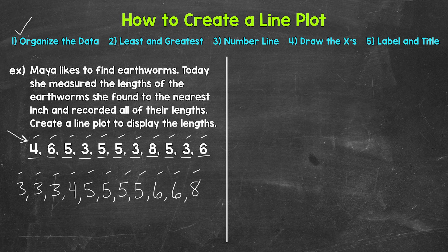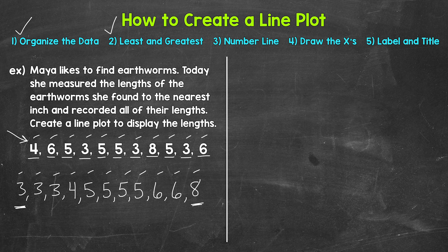Let's move on to step two. Our next step, we need to find the least and greatest number we are working with, so we can make a number line that fits what we have — we want all of our numbers to be included. Since we're in order from least to greatest, this is a pretty quick step, but it's important because it will determine how we write out our number line. The least is three. The greatest is eight. So we are done with step two.